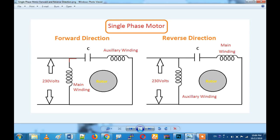We are going to take the main supply. This capacitor will be connected, and then we are going to connect to the other winding. There is a phase power involved. What do we do in the reverse direction? We change the winding and capacitor connections to reverse the motor.